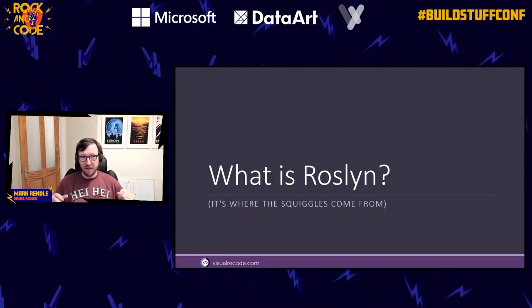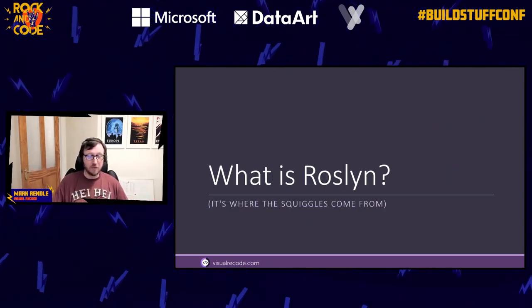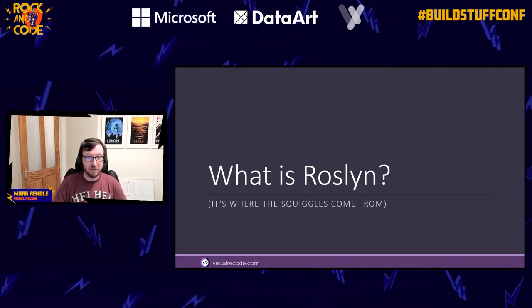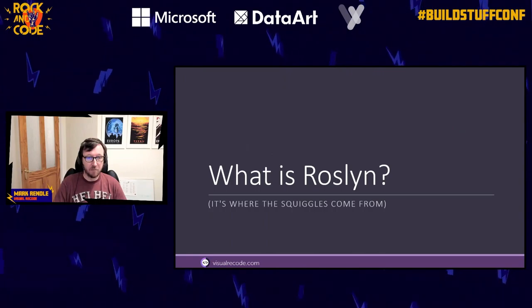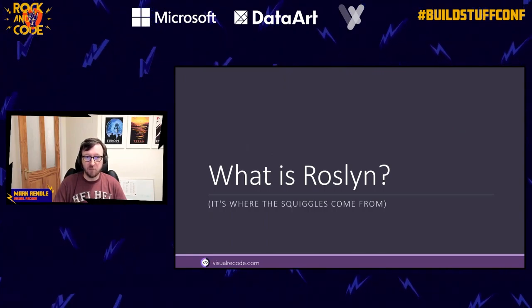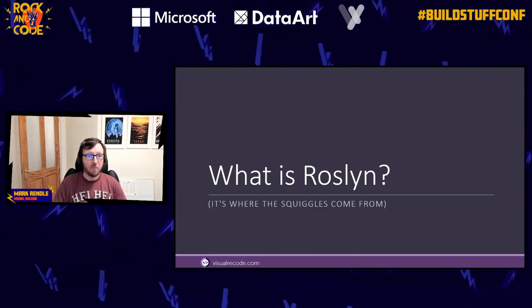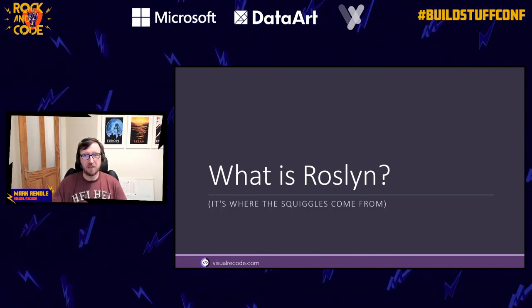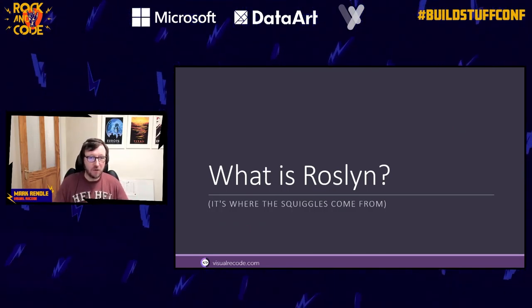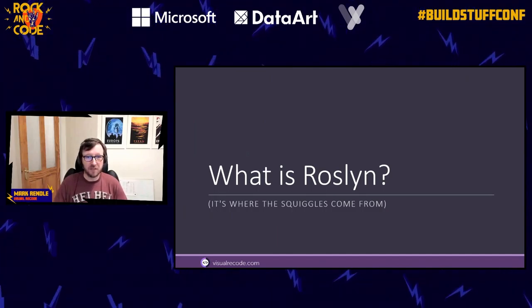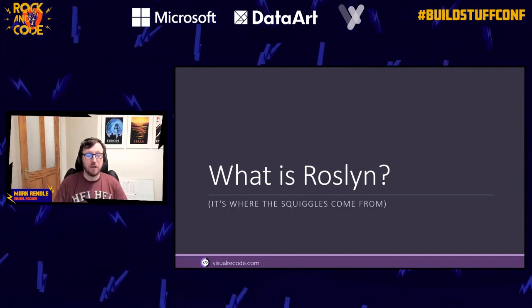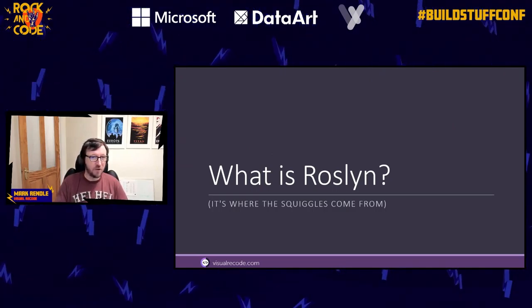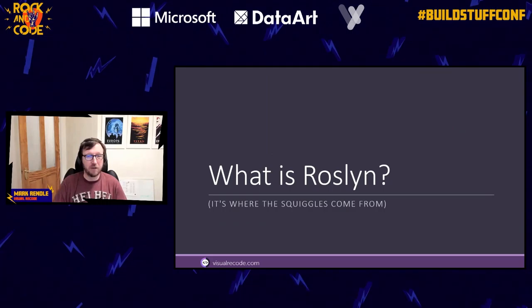So let's start off by talking about what is Roslyn - apart from where the squiggles come from in Visual Studio. Roslyn is the C# compiler - it's also the VB.NET compiler but I don't think anybody cares. It's the C# compiler and it's a compiler as a service, which means you can include it into your code and use it to do interesting things with your code.